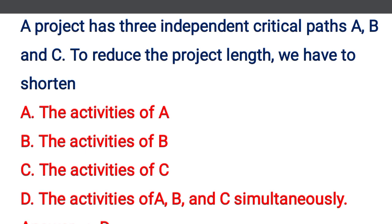Next question: a project has three interdependent critical paths A, B, C. To reduce the project length, we have to shorten — option A: the activities of A, option B: the activities of B, option C: the activities of C, option D: the activities of A, B, and C simultaneously. The correct answer is option D: the activities of A, B, and C simultaneously, because in crashing work we reduce the common activity duration across all critical paths. We will see more in the next video. Thank you.